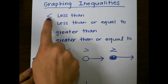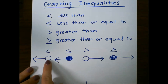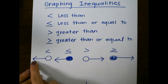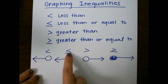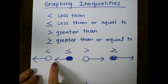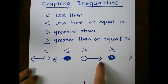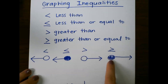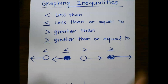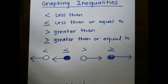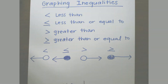So as a review: less than is an open circle shaded to the left. Less than or equal to is a closed circle shaded to the left. Greater than is an open circle shaded to the right, and greater than or equal to is a closed circle shaded to the right.